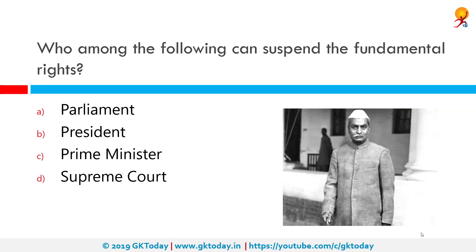Who among the following can suspend the fundamental rights? The correct answer is the President. This is usually known as a national emergency, where the fundamental rights of citizens can be suspended. During a national emergency, all the basic freedoms guaranteed by Article 19 automatically get suspended.